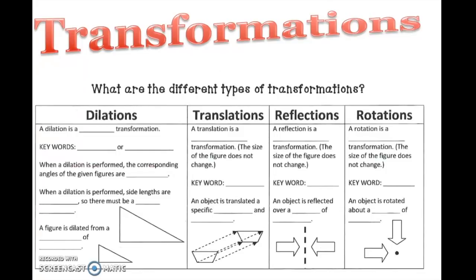Let's look at dilation. A dilation is a similarity transformation. Keywords to look for: enlarge or reduce. When a dilation is performed, the corresponding angles of the given figures are congruent, and congruent is just a fancy word for same.